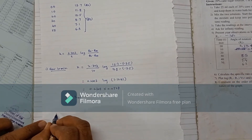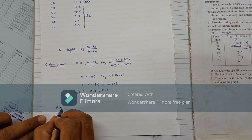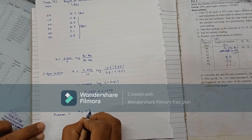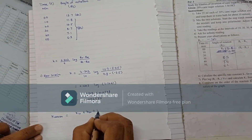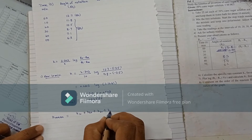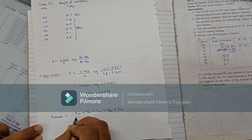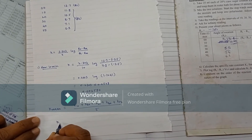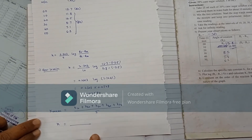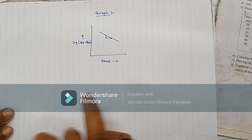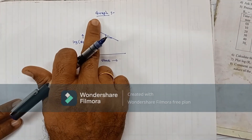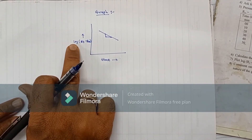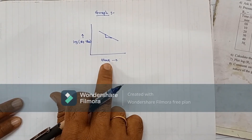Then take the mean of all the K values. K_mean = (K₁₀ + K₂₀ + K₃₀ + K₄₀ + K₅₀) / 5. This is the mean K value. After calculating the K value, we have to plot a graph of log(Rₜ − R∞) versus time.